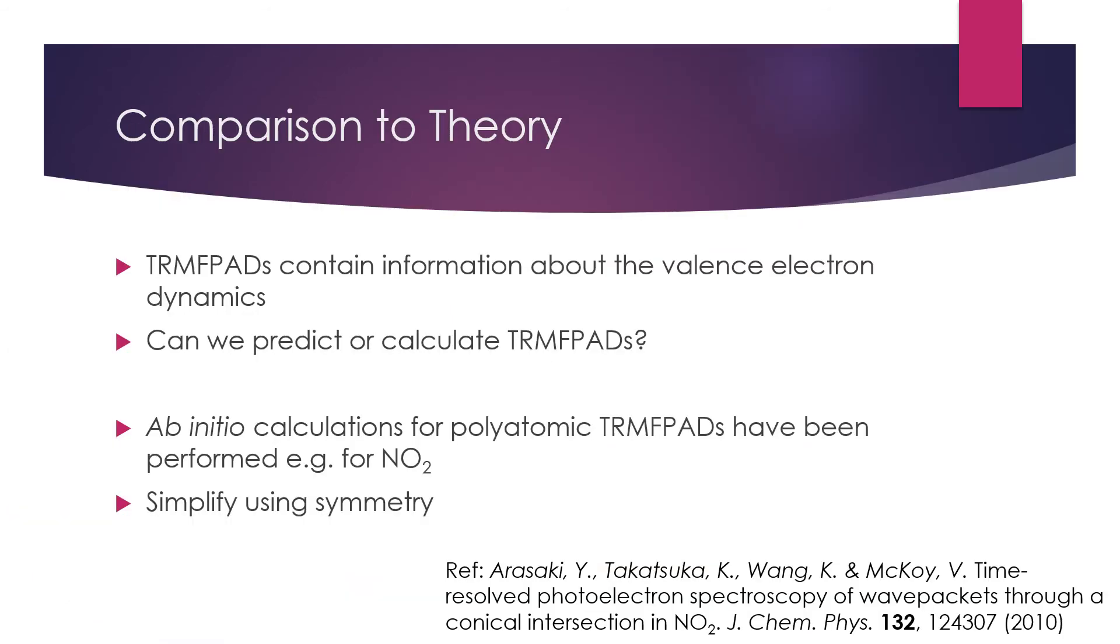Now, let's have a look at how this compares to the theory and how we can use what we've learned from this experiment in the future. It's clear that the angular distributions we've just measured can tell us much about the valence electron dynamics of the system of interest. If we could predict or model these distributions before taking any measurements, we may be able to use this to model different reactions in this system.